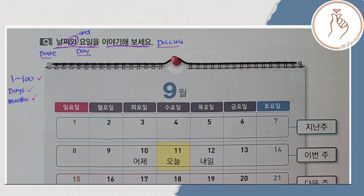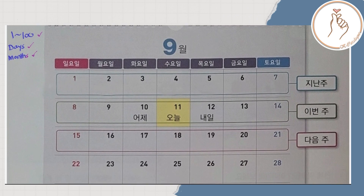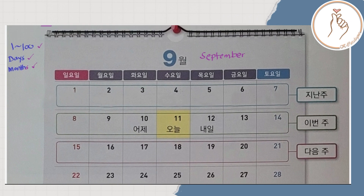We have another Korean calendar in our picture. If you remember from our previous lesson, guwol is September. If you don't remember, you can always check our previous lesson. Okay, so here are our days of the week.